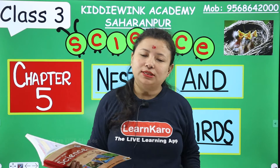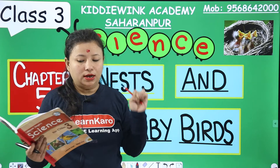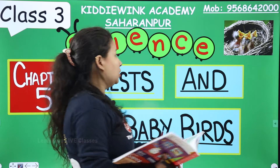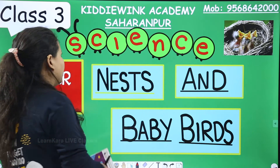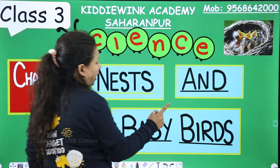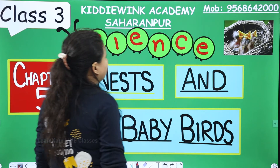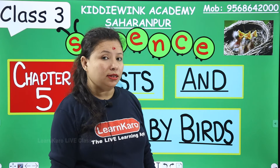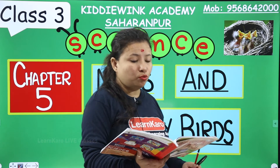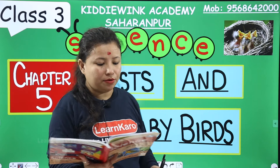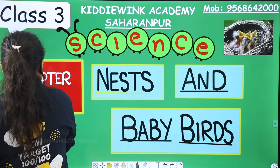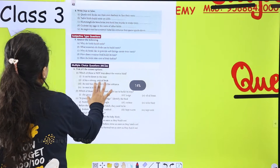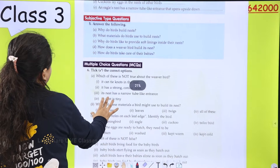Hi kids, welcome back once again. This is your Anjali ma'am. So today we have to do question answers of lesson number 5, chapter number 5, Nets and Baby Birds. In my previous class we had done book work of chapter number 5, and today we have to answer these questions. So here are 5 question answers.